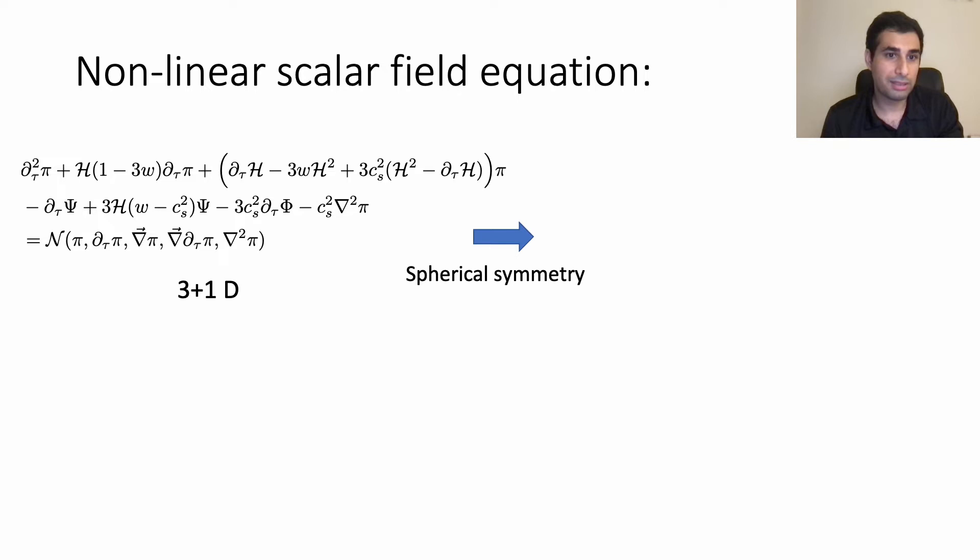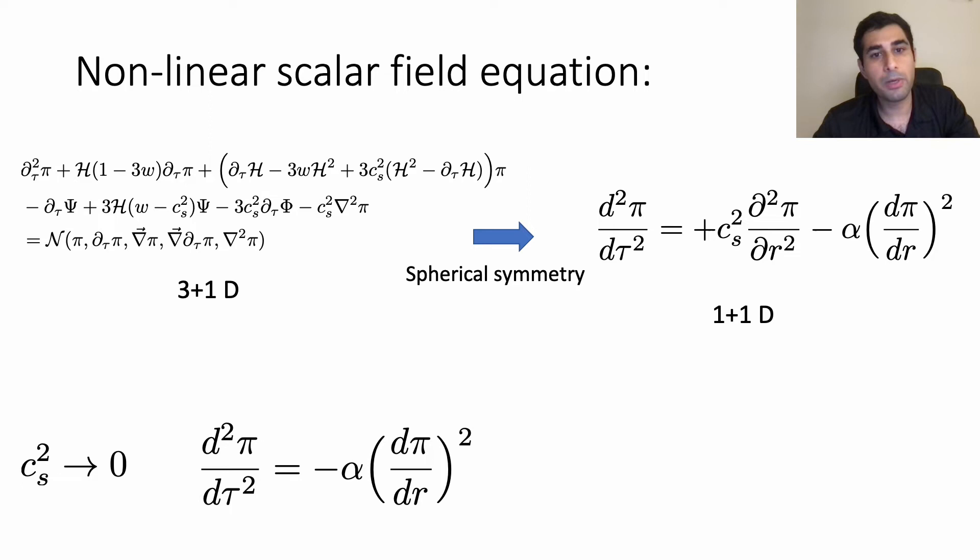And what we obtain is this much simpler partial differential equation where the first term is the Laplace term. And if we have α equal to zero we basically cover the wave solution. And the non-linear term which I discussed that is the main reason of the instability is this term. And specifically for c_s² goes to zero where we don't have wave solution at all, so the wave completely goes away, we recover this non-linear partial differential equation.